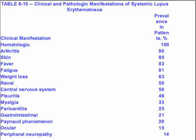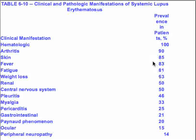Clinically, lupus involves everything. The number of patients that have some type of hematologic manifestation of lupus is 100%. Even though the kidneys are the most feared early manifestation, it's only present in about 50% of patients. Arthritis is much more likely to be present, as are skin lesions and general things like fever, fatigue, and weight loss. Remember: where you have nuclei is where lupus attacks — arthritic, hematologic, and renal manifestations are all 50% or more.